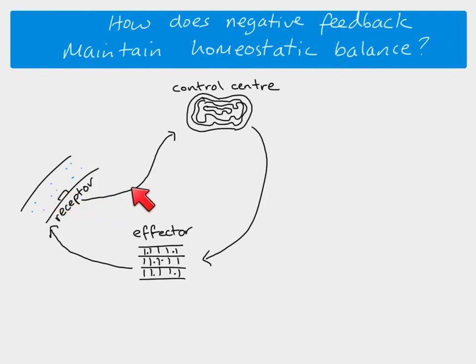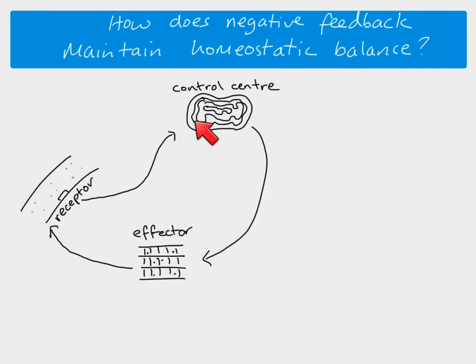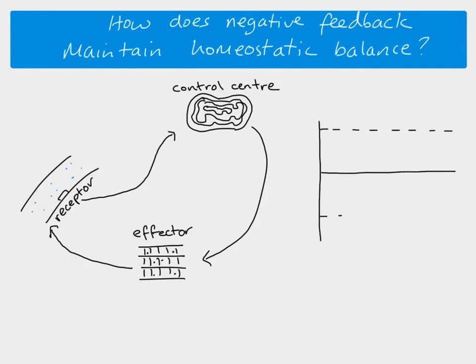This whole cycle describes negative feedback: a factor has increased, and then the control center causes something to happen which decreases the factor. If the factor then decreased too far, impulses would be sent to tell the control center, which would then send impulses to the effector to increase that factor again. That's how negative feedback works.